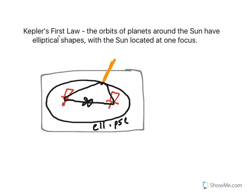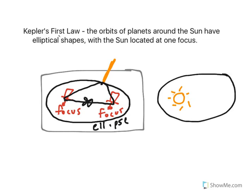Where the two red points — the pins — are located are called focus points. Kepler's first law says the orbits of the planets around the sun are in the shape of ellipses. If I drew the sun in and then drew in a typical planet's orbit, it would make this elliptical shape. The sun is located at one of the focus points. In this case, the earth orbits in the counterclockwise direction. All planets orbit counterclockwise in the shape of an ellipse.